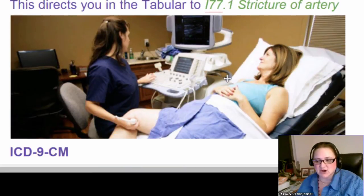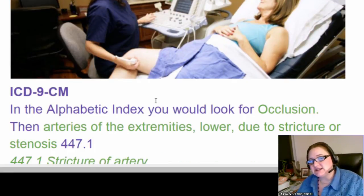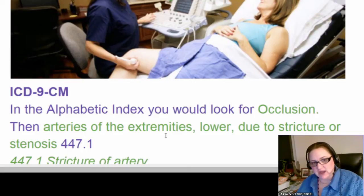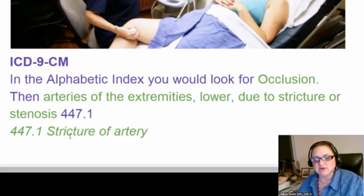They also do ultrasounds of the leg, so she would have had one, but it would have been on the lower part of the leg. Now, in ICD-9, it's listed a little differently — it's under occlusion, then it goes to arteries of the extremities. ICD-10 doesn't do that. Then it says lower, and then due to stricture or stenosis, which is 447.1. You go look at it in the tabular and it says stricture of artery, which does not mention which artery by any means. If you don't know the anatomical areas, you're up the creek without a paddle.